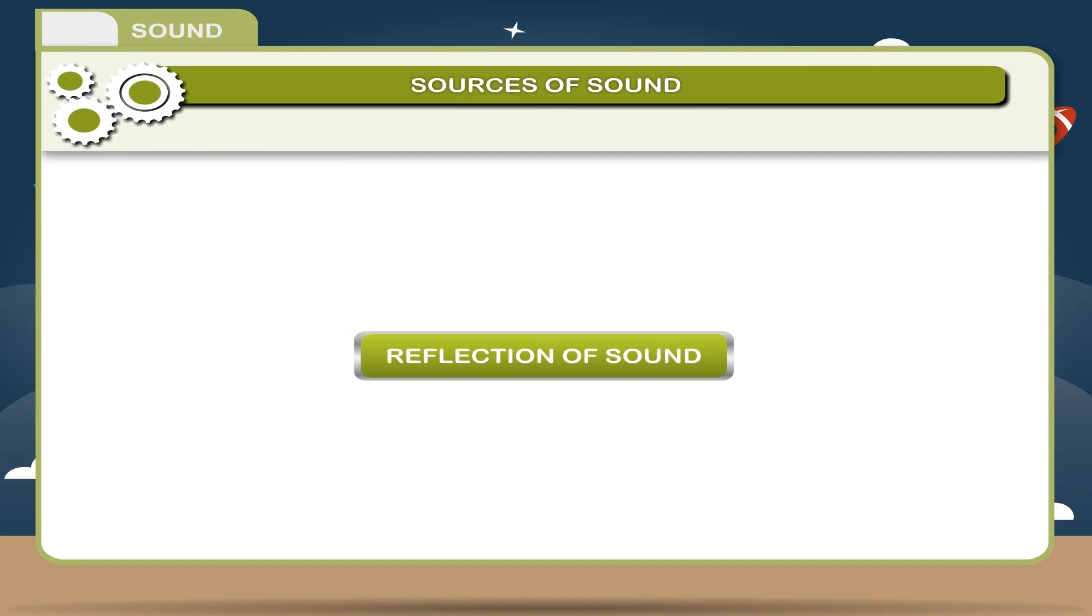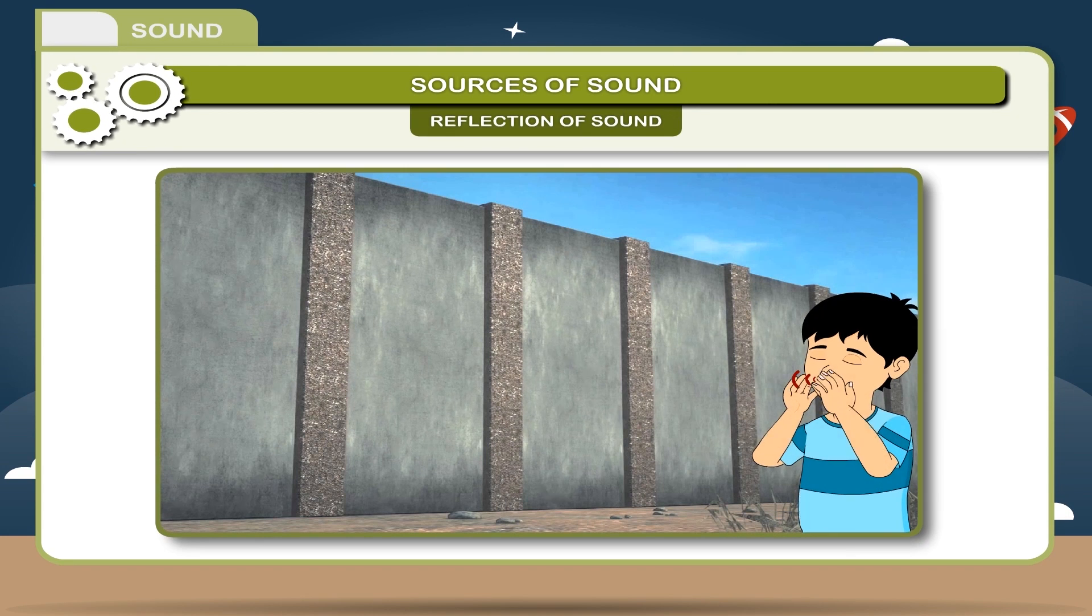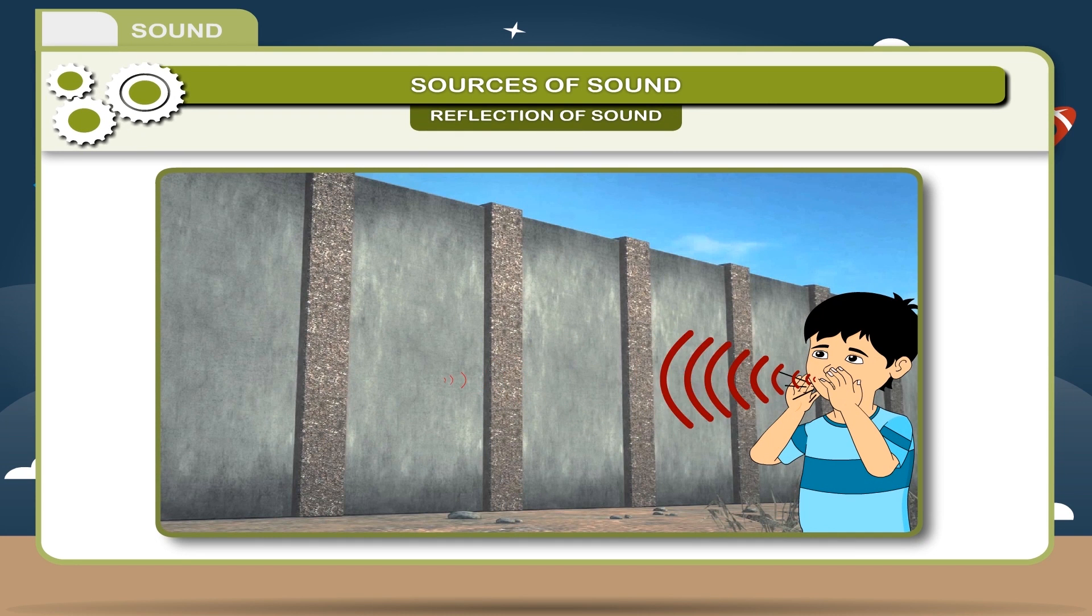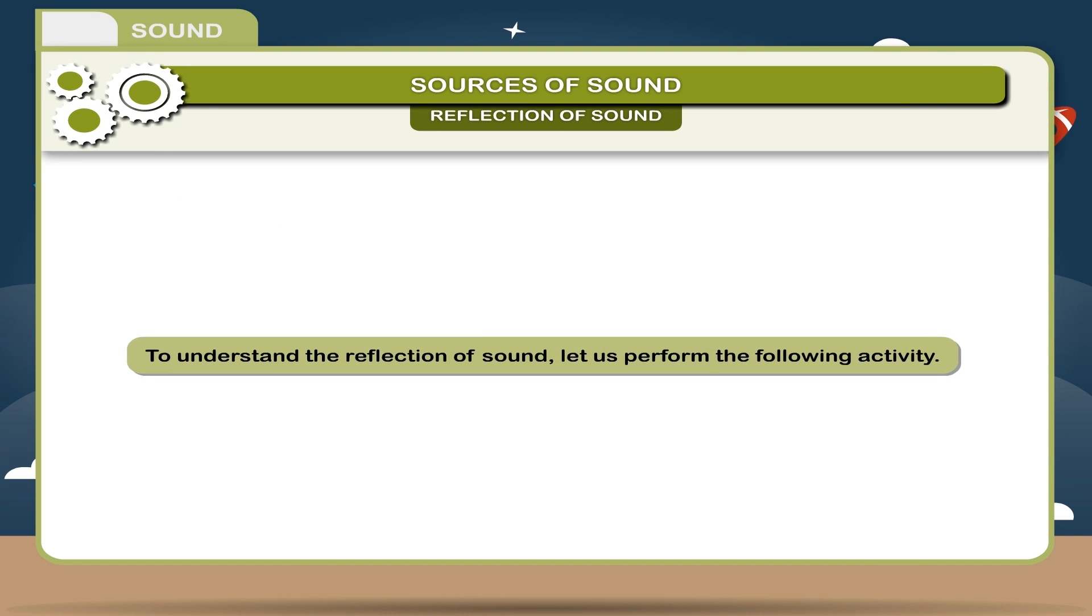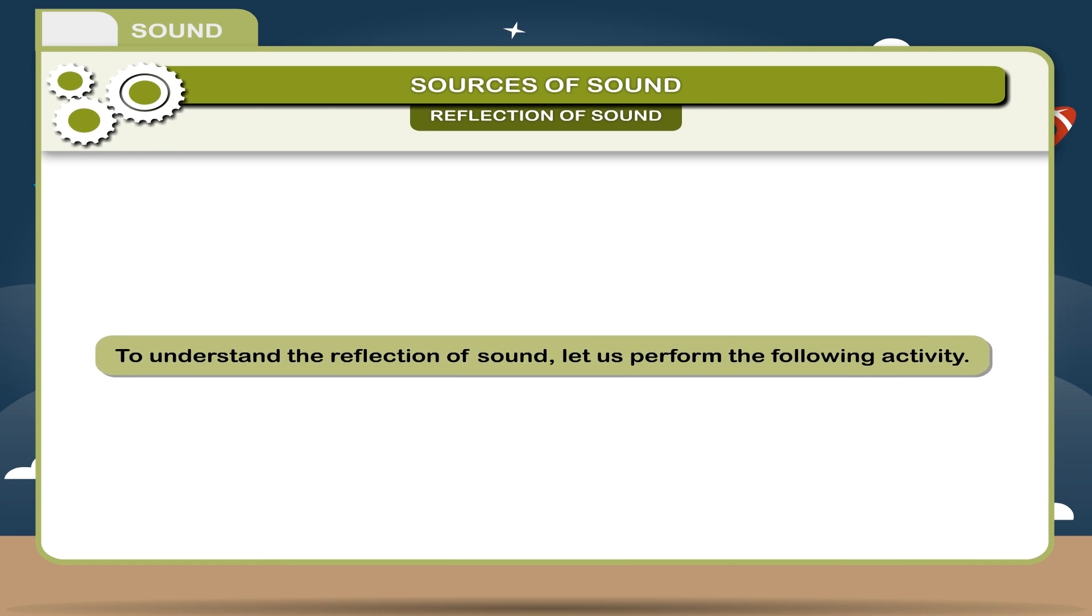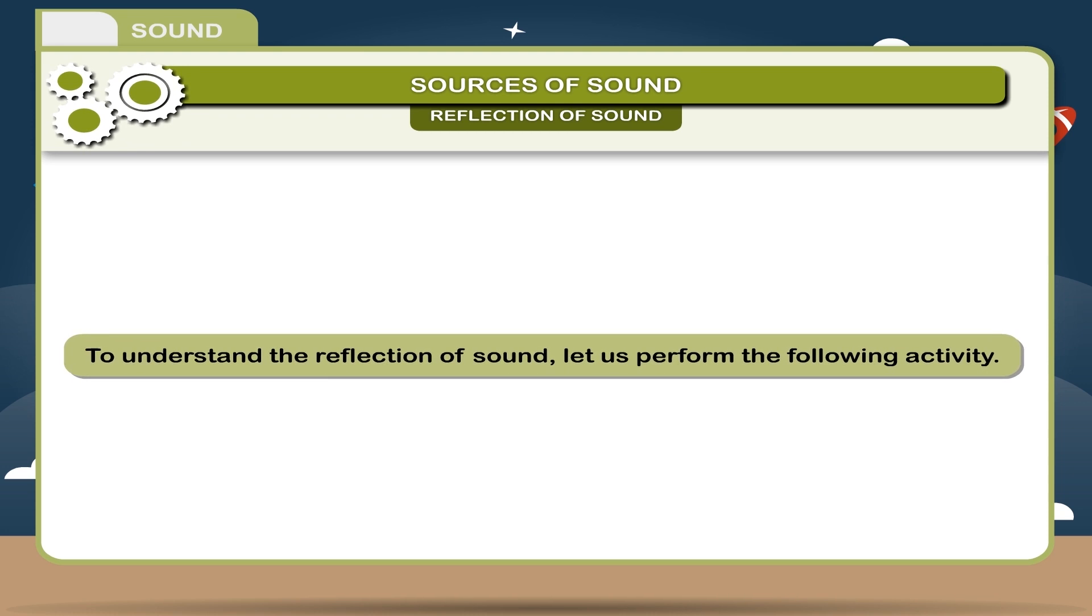Reflection of sound. Like light, sound also reflects. Sound has a tendency of reflection when it strikes on a rigid surface. In an empty room, this sound given by a source is heard directly and by reflection also. To understand the reflection of sound, let us perform the following activity.